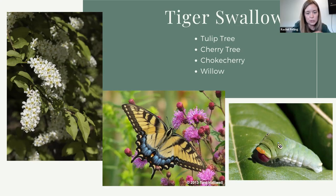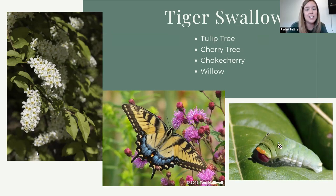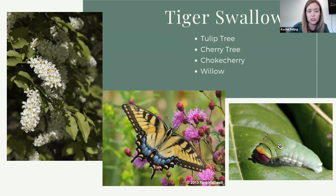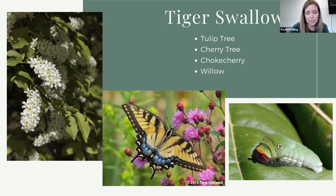The adults have a blue stripe along the bottom — that's how you tell it's male; the female is all yellow there. Eastern tiger swallowtails host on multiple kinds of trees: tulip trees — the state tree of Indiana — cherry tree, choke cherry, which is a smaller variety and a really cool one to look for, and willow, another type of tree we've talked about more than once. So love Eastern tiger swallowtails — they are beautiful.